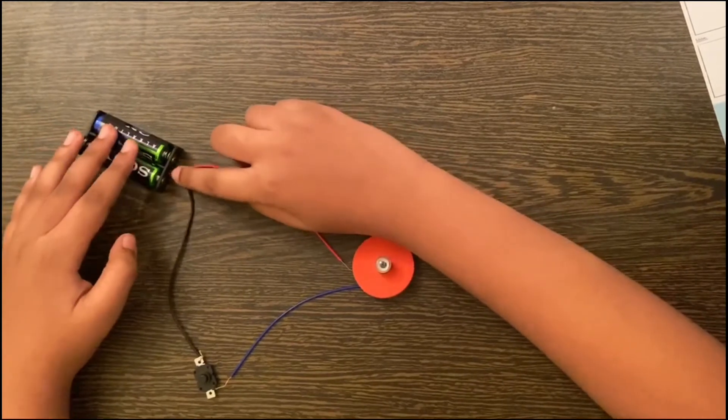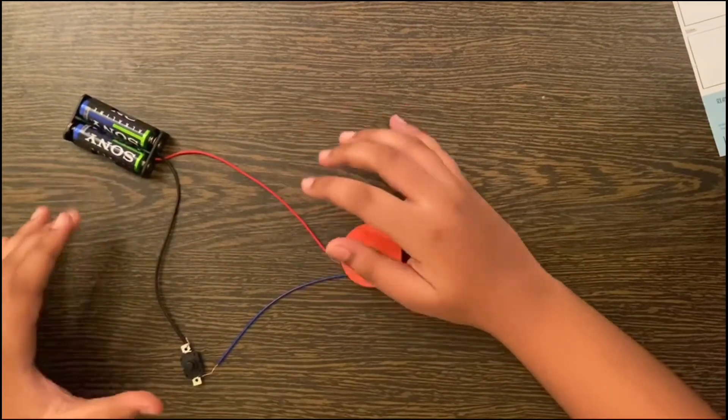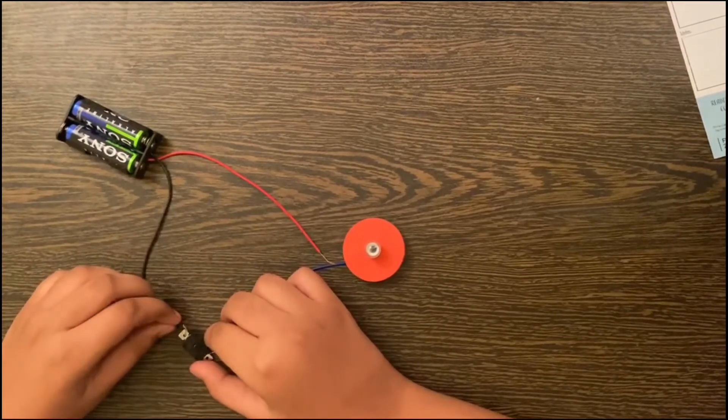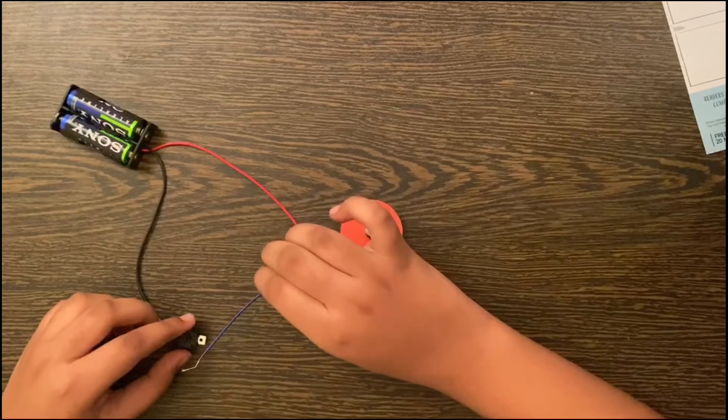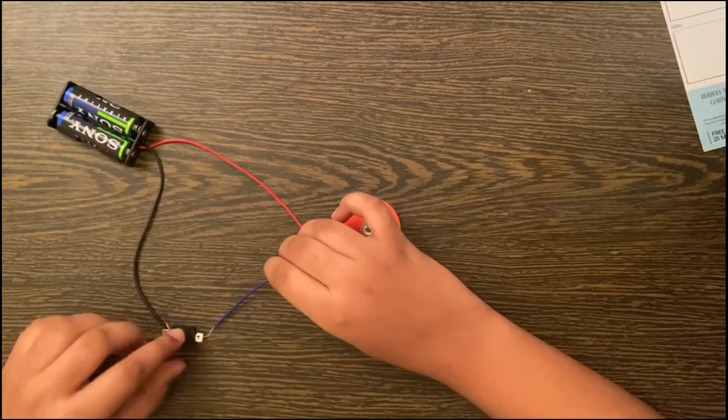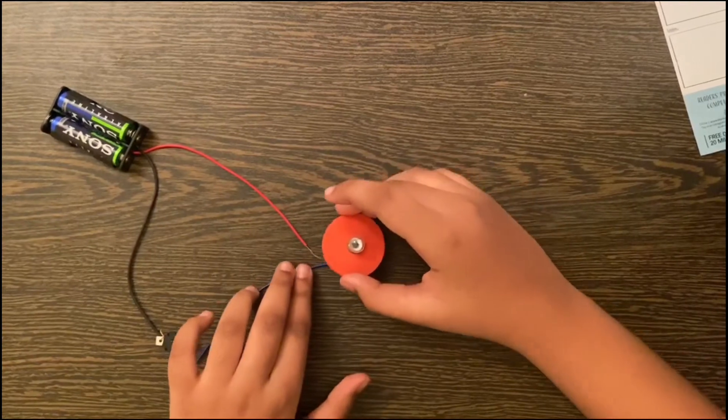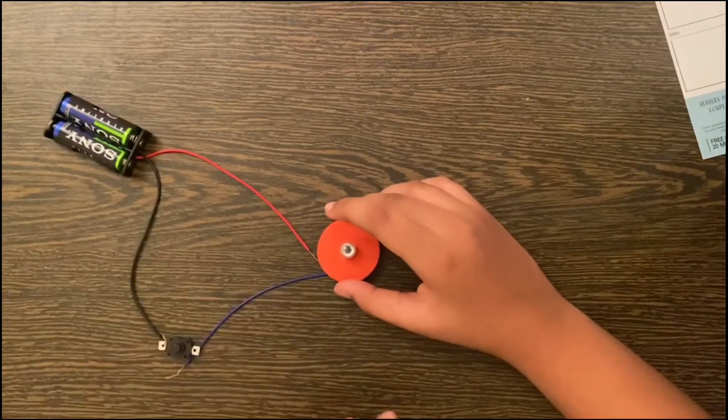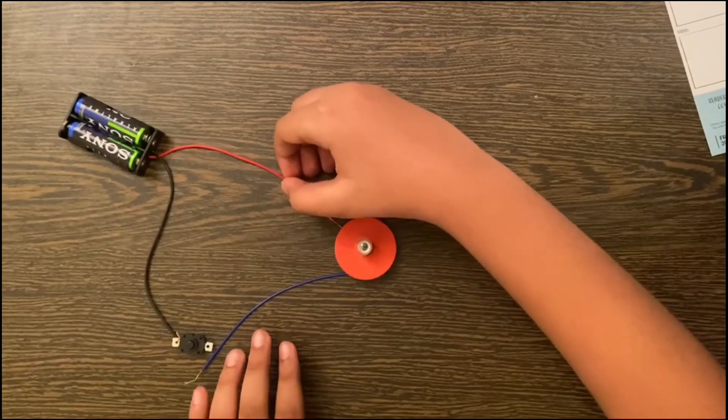Two wires are already connected to the power source. Let's start connecting now. The end of the black wire will go into the switch. One end of the blue wire will also connect to the switch. The other end will go into the light bulb, and the red wire end will also go into the light bulb.